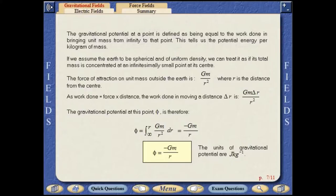The gravitational potential at this point is therefore minus gm over r. The units of gravitational potential are joules per kilogram.